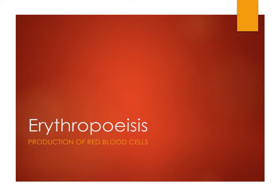This is part two of erythropoiesis. We did part one which was granulopoiesis or leukopoiesis with emphasis on granulopoiesis. This section covers erythropoiesis — the production of red blood cells — and towards the end we'll also talk about platelet production: thrombopoiesis or thrombocytopoiesis.